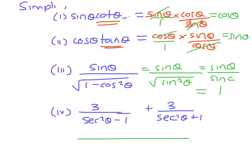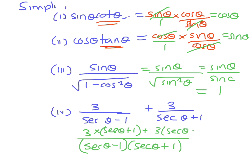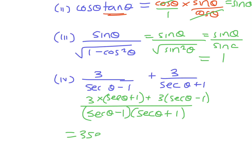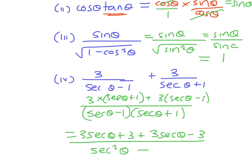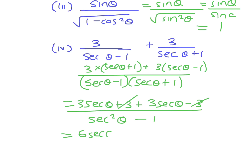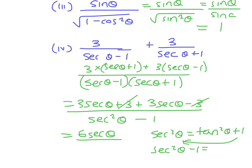This one requires a common denominator: 3 over (sec θ − 1) plus 3 over (sec θ + 1). The common denominator is (sec θ − 1)(sec θ + 1). On top we get 3(sec θ + 1) plus 3(sec θ − 1), which simplifies to 3 sec θ + 3 + 3 sec θ − 3 = 6 sec θ. The denominator is the difference of two squares: sec² θ − 1. The threes cancel and we get 6 sec θ over (sec² θ − 1). Since sec² θ − 1 = tan² θ, the denominator is tan² θ.